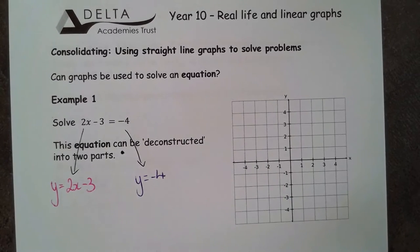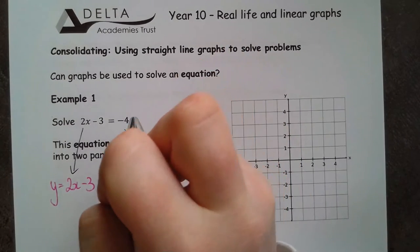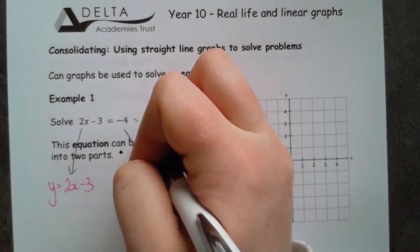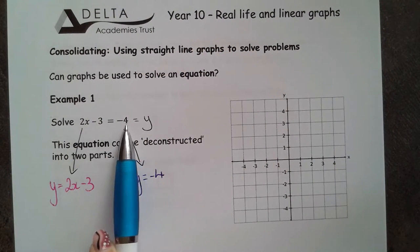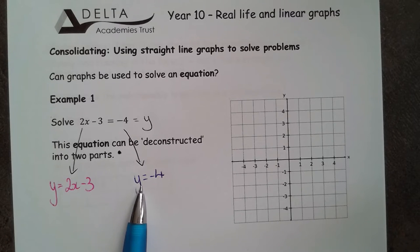Because we're looking for the place where these are equal, what we're actually looking for is the y and x coordinates that make these the same. So I can say that y is equal to both of these things at the same time.